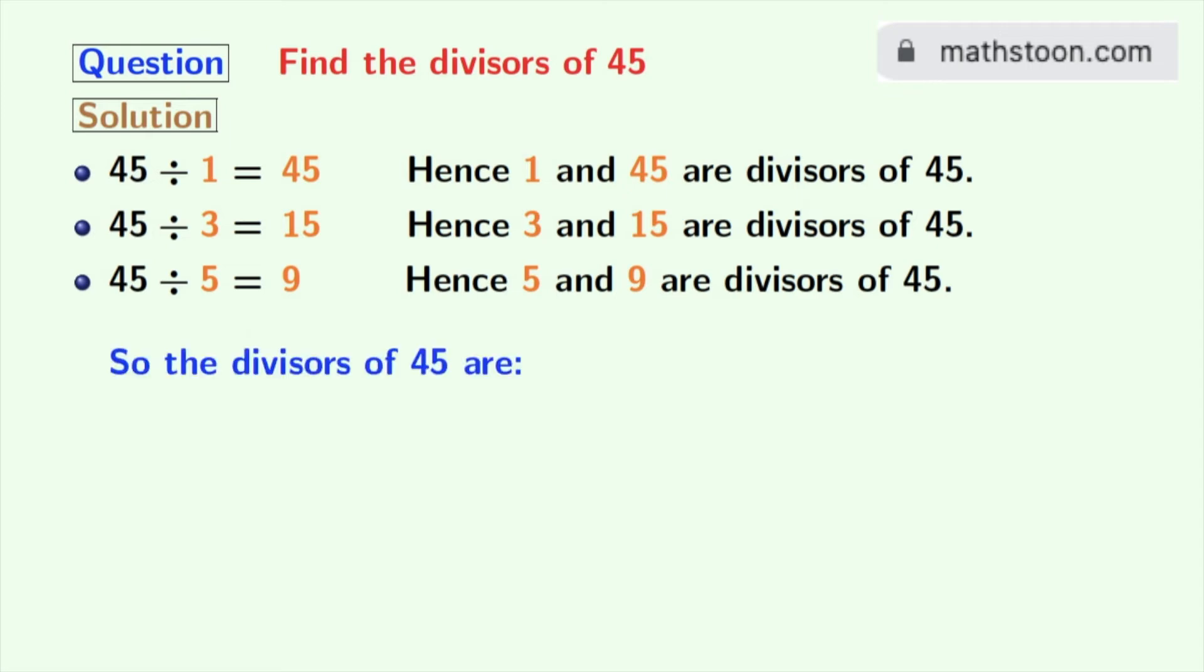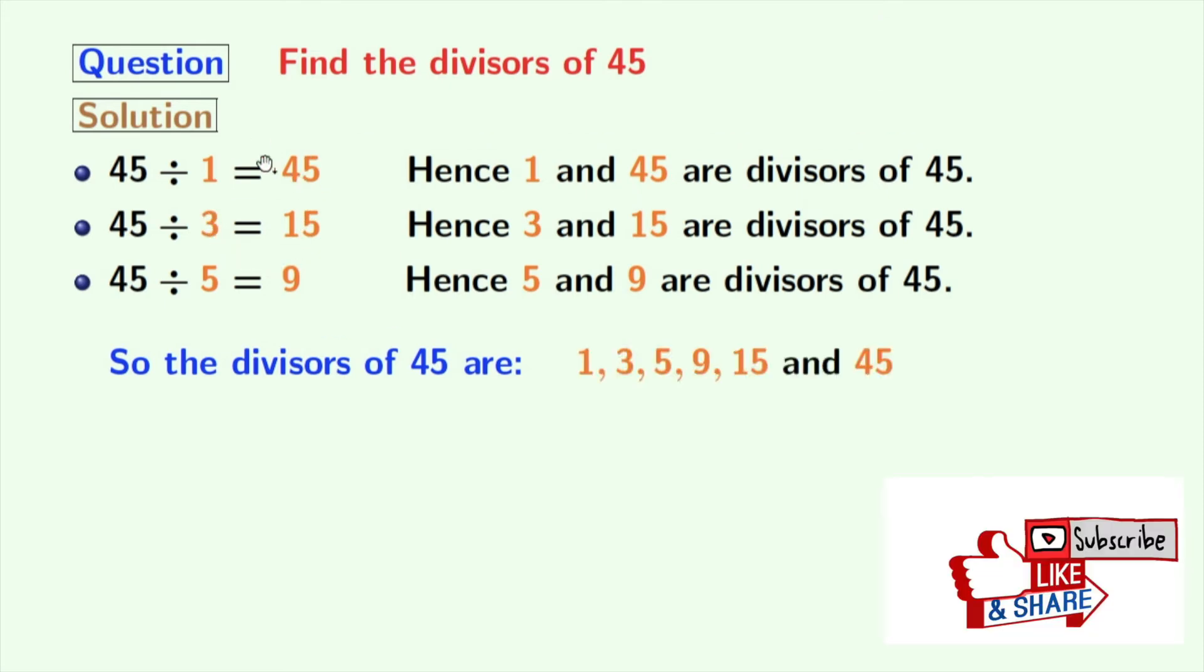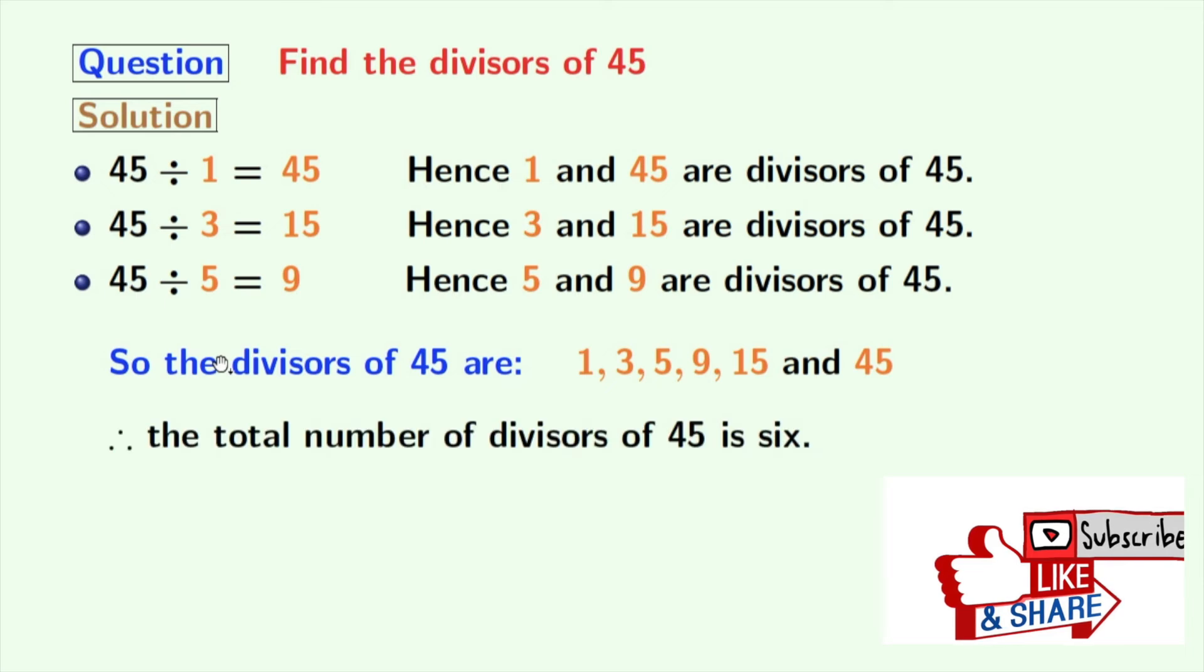Now we have all the divisors of 45 which are in orange colors. These numbers are 1, 3, 5, 9, 15, and 45. So the total number of divisors of 45 is 6.